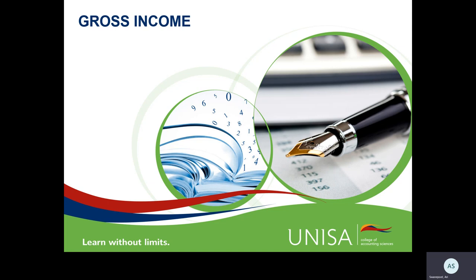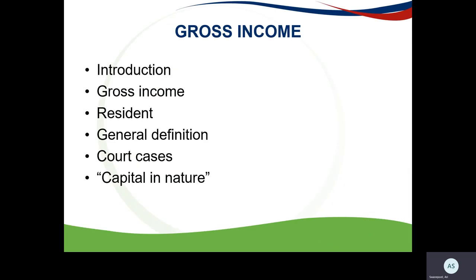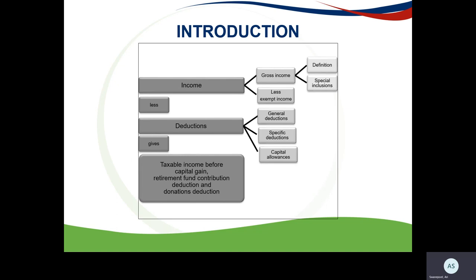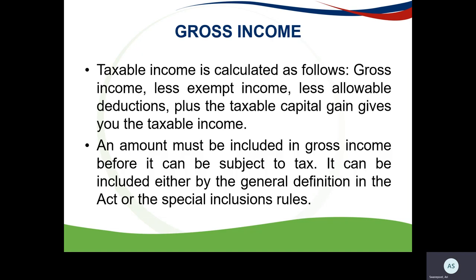We will look at the introduction to gross income: its definition, the components of the definition, court cases, and the capital in nature component. The tax framework shows that taxable income is gross income less exempt income. Taxable income is calculated as: gross income plus special inclusions, less exempt income, less allowable deductions, plus the taxable capital gain.